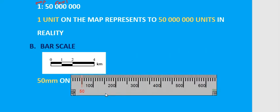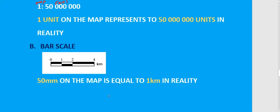So that's how you would explain the bar scale. You would say: we've measured, and 50 millimeters on the map represents, or is equal to, one kilometer in reality. The only trick with the bar scale is you have to measure first — so you have 50 millimeters on the map representing one kilometer in reality.